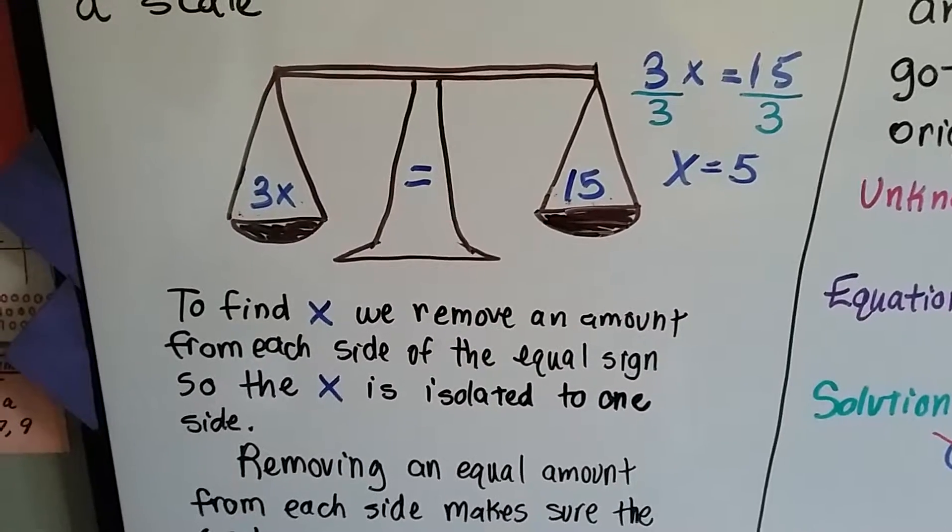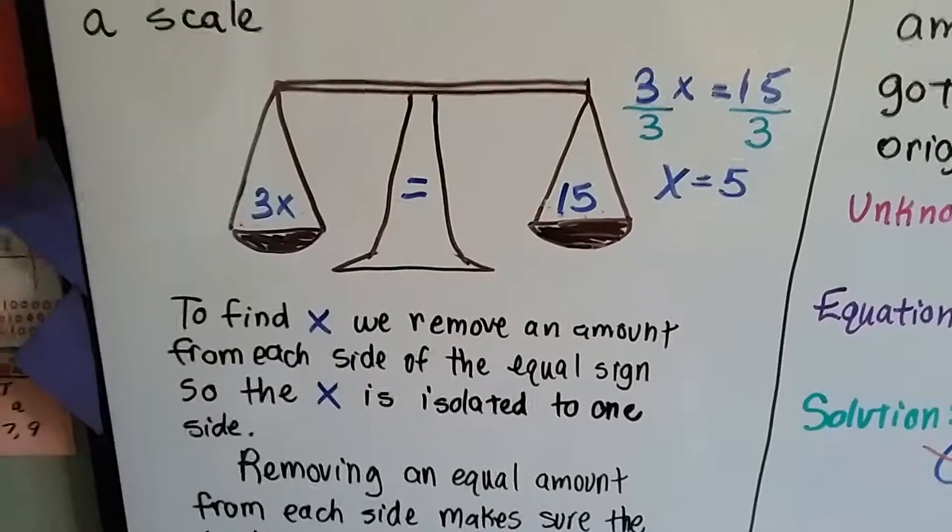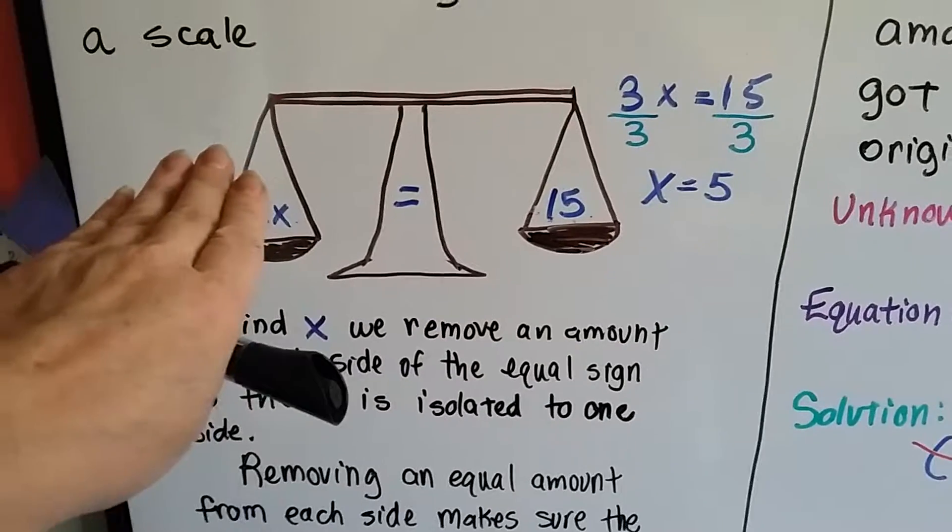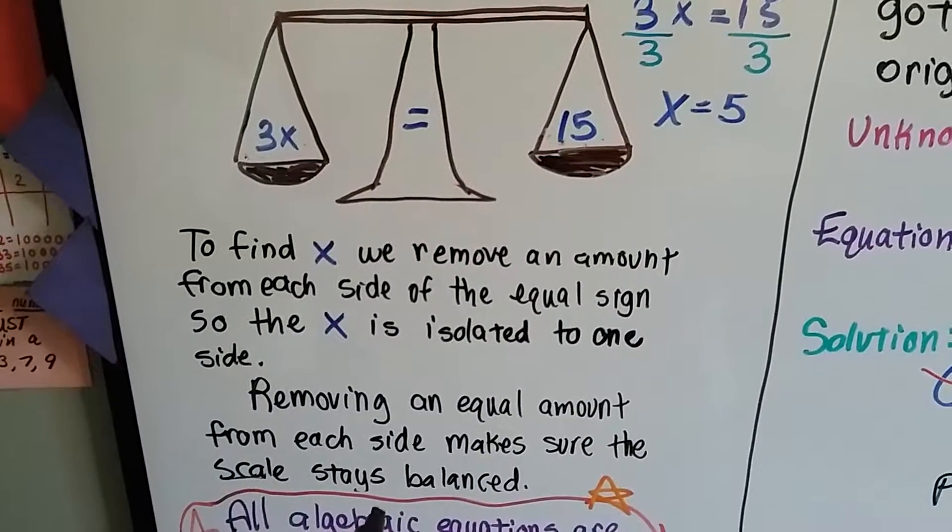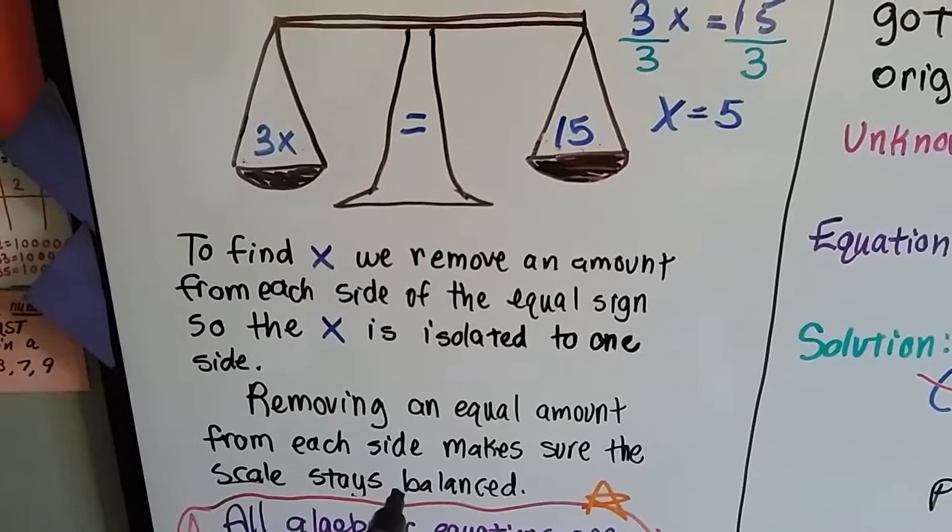So we want to get rid of that coefficient 3. We want to make it so that the x is by itself. So what we can do is we can remove an equal amount from each side and make sure that the scale stays balanced.